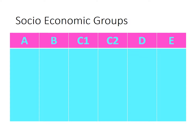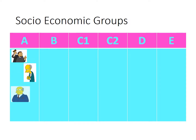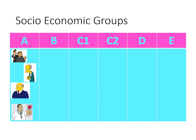What I like to do is have a look at how that works for The Simpsons, because a lot of people have seen it. So in my A category, I have people like the Judge, Mr. Burns the company owner who runs a nuclear power plant, Superintendent Chalmers who runs the school system in Springfield, and Dr. Hibbert. They're all A category.